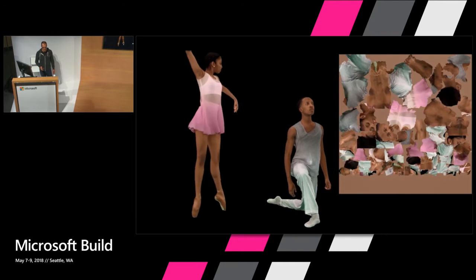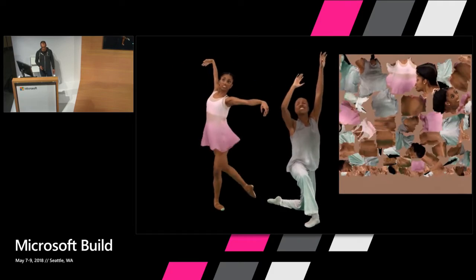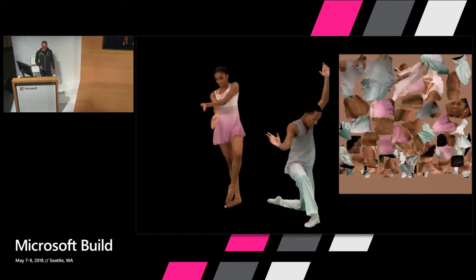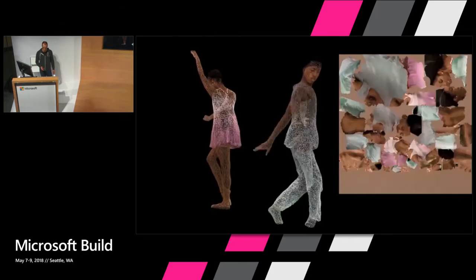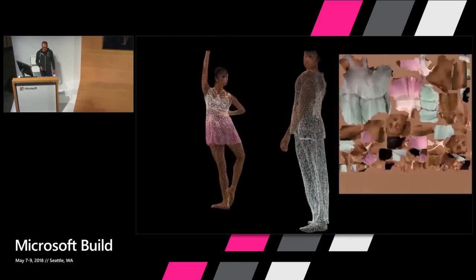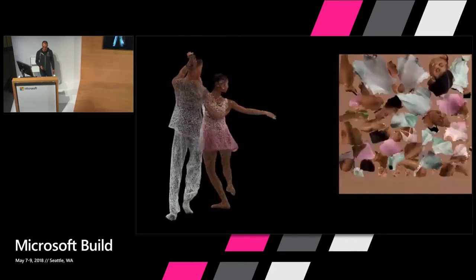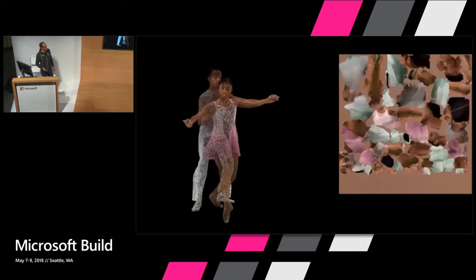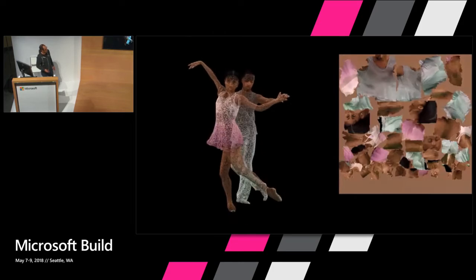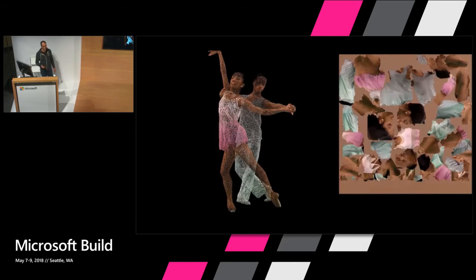Not every frame gets a fresh mesh. By maintaining consistent topology within groupings of frames, we're able to get consistent UV atlases between frames, which allows us to do temporal compression on the textures and get a much smaller file size — which is especially useful if you're targeting something like the HoloLens.